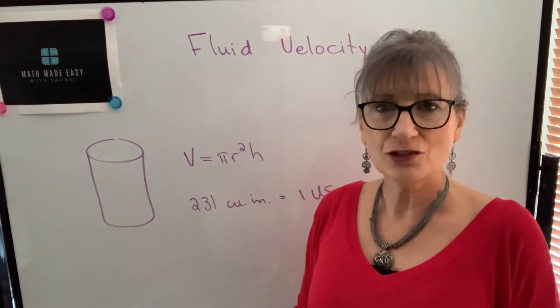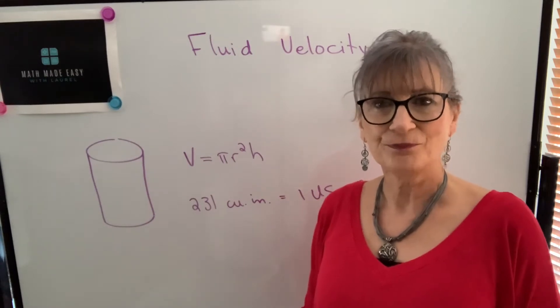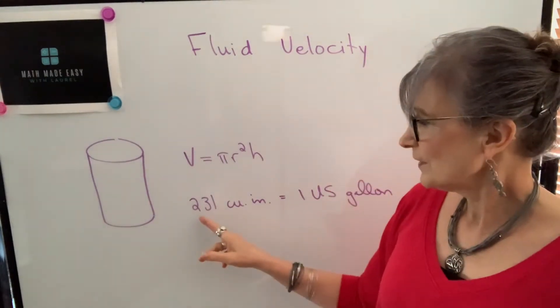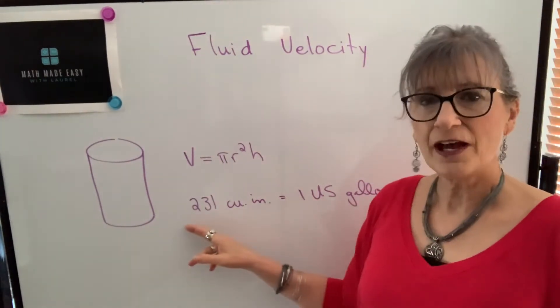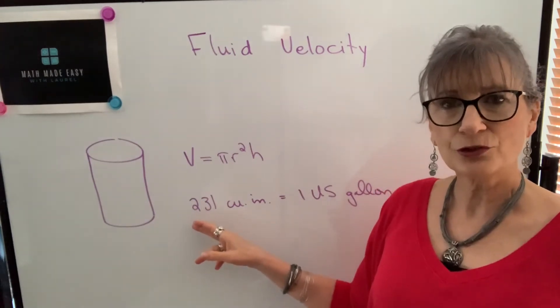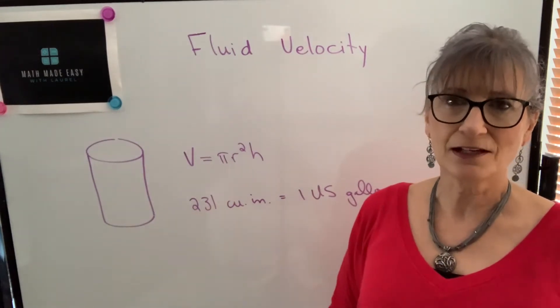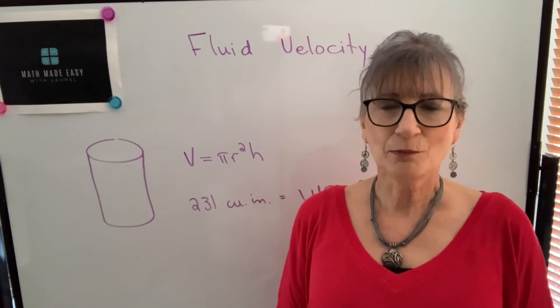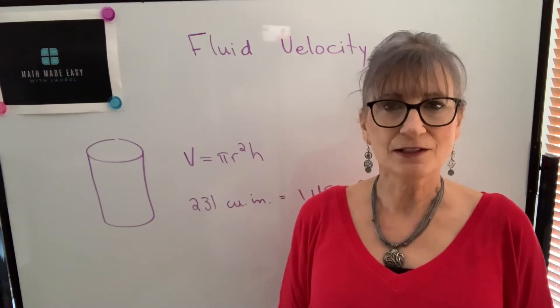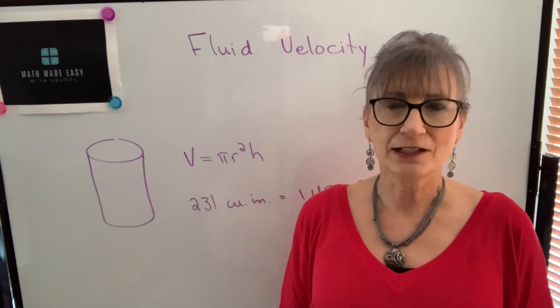And that, if your dimensions are in inches, will give you volume in cubic inches. The other thing that we're going to use is the fact that there are approximately 231 cubic inches in a U.S. gallon. When we're working with pump capacity, it will be expressed in gallons per minute, and that means American gallons per minute.